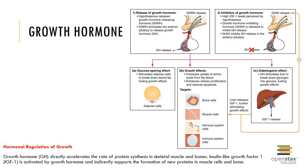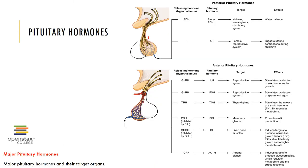Here you can see the hormonal regulation of growth hormone. Growth hormone accelerates the rate of protein synthesis in skeletal muscle and bones and has a wide impact on the body. Here are the major pituitary hormones and their target organs that we just discussed.